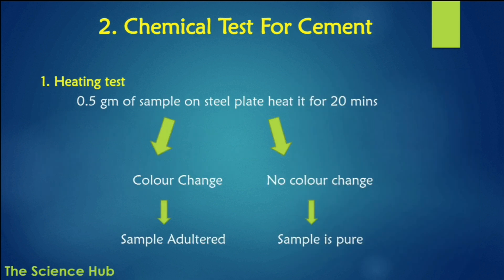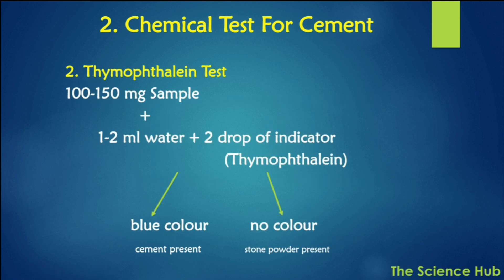For chemical tests: the heating test involves taking 0.5 grams of cement sample on a steel plate and heating it for 20 minutes. If the color changes, the material is adulterated; if the color does not change, the sample is pure. The thymophthalein test involves taking 100–150 mg of cement, adding 1–2 ml of water, and then 2 drops of thymophthalein indicator. If the color changes to blue, the cement is pure; if the color does not change, adulteration may be present.